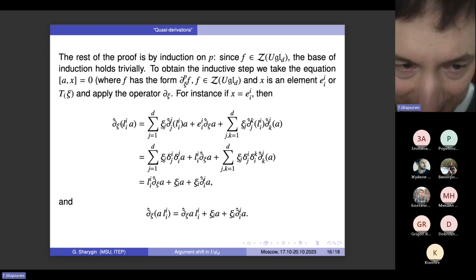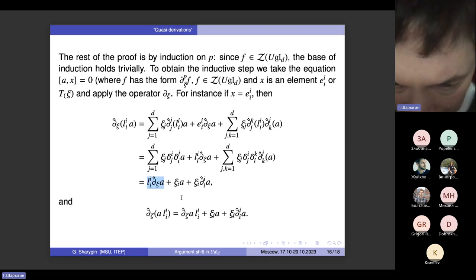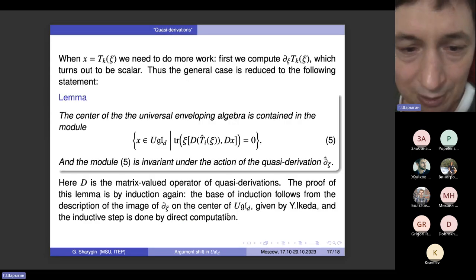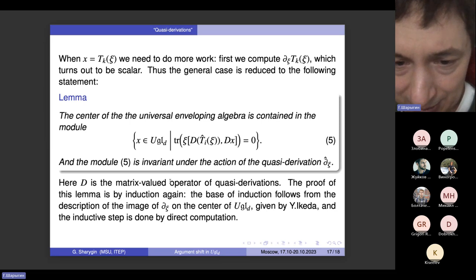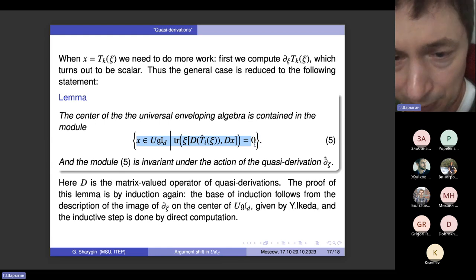And then we apply the operator D sub Xi to this commutator. So this hat should be removed—again a misprint, which has been due to compiling this from two files. For instance, here is how you prove that whenever A commutes with L_ii, its derivation will commute with L_ii as well. So we just apply D Xi to L_ii, apply it to A L_ii, and compare the results. The right hand sides will differ only at these terms. So these terms should be equal if the left hand sides coincide. The same is done for the elements T hat i of Xi, but this time you need to do some kind of a little bit more work. You need to do double induction, and you will need also the explicit formula for the first derivation which I mentioned, which has been proved by Yasushi.